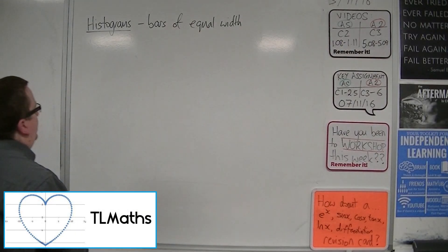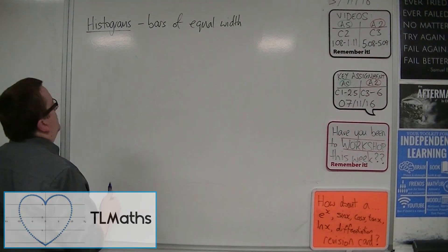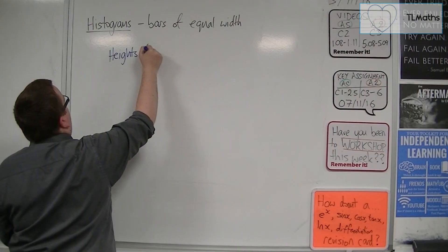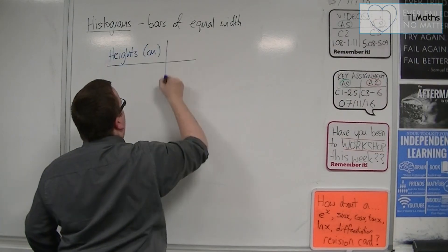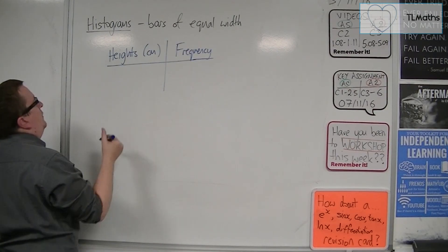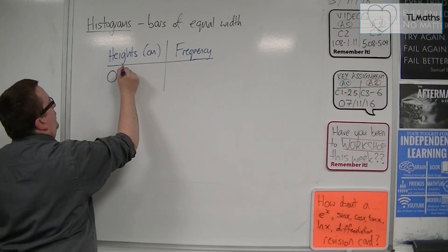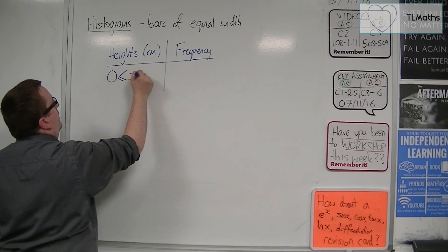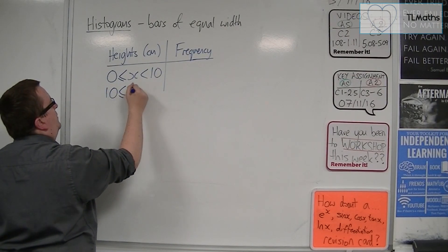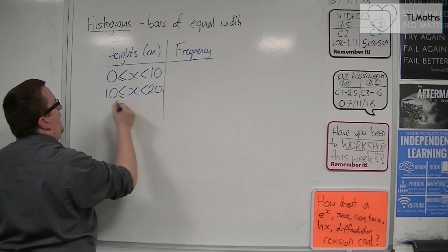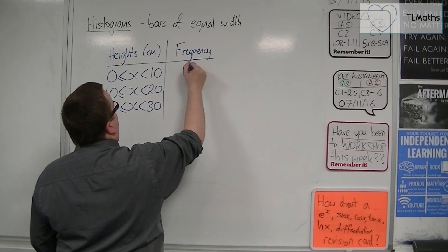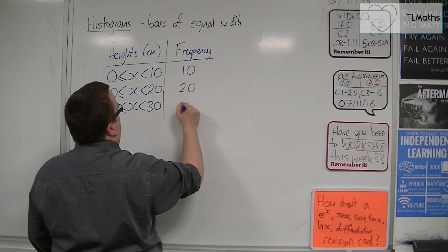So let's say we've got a frequency table that looks something like this. We've got some heights, measured in centimetres, and we're going to have some frequencies. The heights range from 0 up to 10 centimetres, from 10 up to 20, and from 20 up to 30. The frequencies are 10, 20, and 30 respectively.